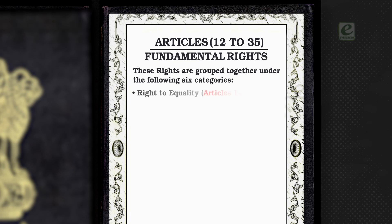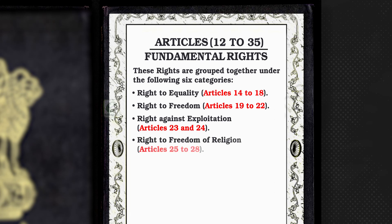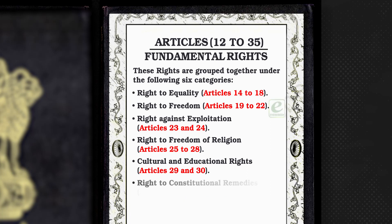Right to Equality, Articles 14 to 18. Right to Freedom, Articles 19 to 22. Right against Exploitation, Articles 23 and 24. Right to Freedom of Religion, Articles 25 to 28. Cultural and Educational Rights, Articles 29 and 30. Right to Constitutional Remedies, Article 32.